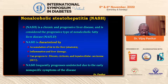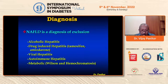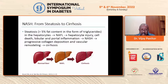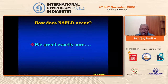NASH frequently progresses undetected because there are hardly any symptoms of the disease. NAFLD is a diagnosis of exclusion — you knock off alcohol-induced hepatitis, drug-induced hepatitis, viral hepatitis B and C, autoimmune hepatitis, and metabolic diseases like Wilson's and hemochromatosis, and that leaves you with NAFLD. Steatosis is more than 5% fat content in the form of triglycerides, and once you have hepatocellular injury and enzymes begin to increase, that causes NASH, which can progress to cirrhosis and hepatocellular carcinoma.